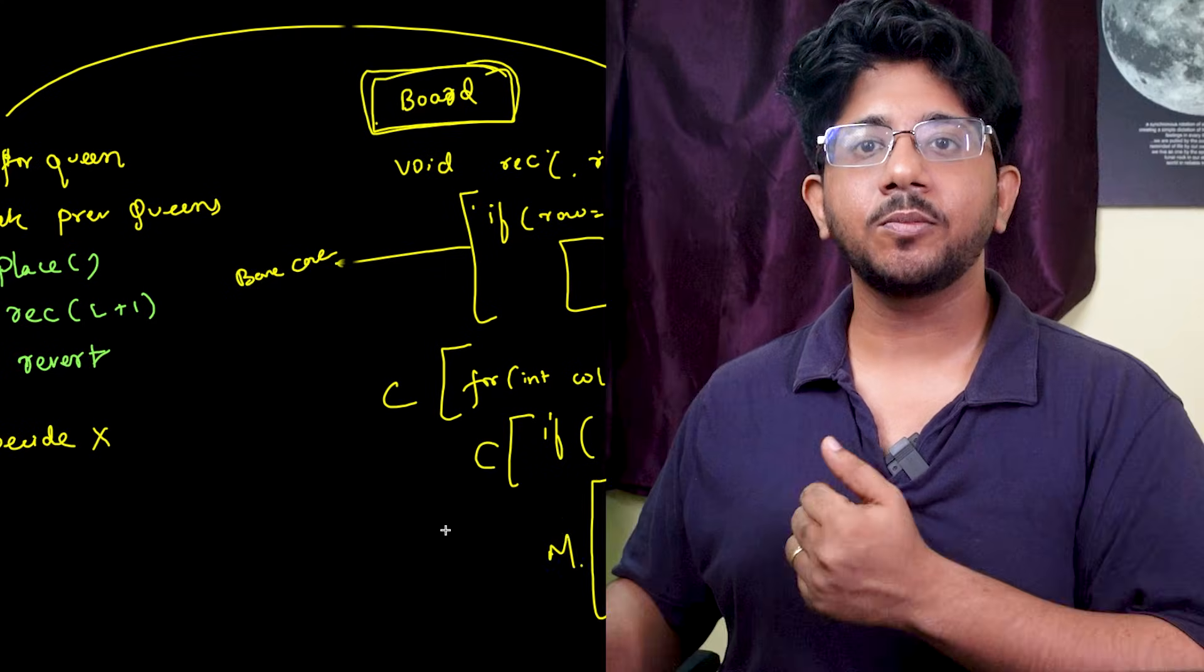This is enumerating on choice. This is check. This is move. Any problem can be modeled like this.